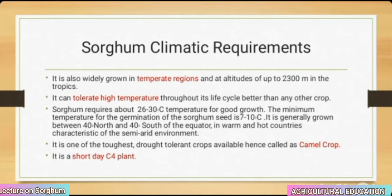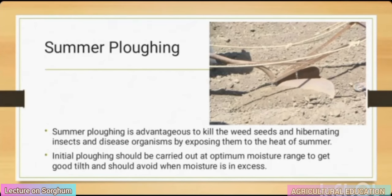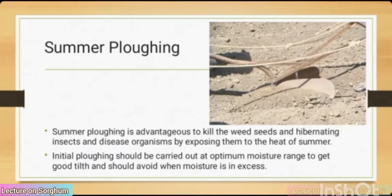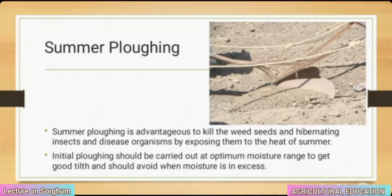Summer plowing is advantageous to kill weed seeds and hibernating insects and disease organisms by exposing them to the heat of summer. Initial plowing should be carried out at optimum moisture range to get good tilth and should be avoided when moisture is in excess.